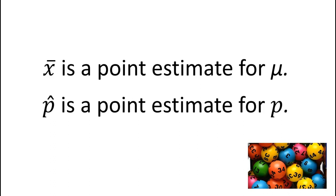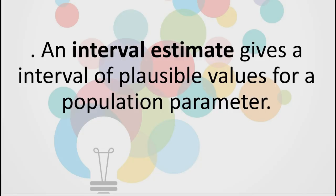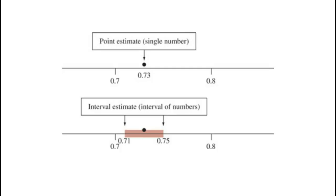We know that due to sampling error, the statistic or point estimate is rarely exactly equal to the parameter. Instead of using the point estimate, which is a single number, we can use an interval estimate. An interval estimate gives an interval of plausible values for a population parameter — an interval of numbers believed to cover the actual value of the parameter. In the illustration from your book, a point estimate is a single number, while an interval estimate creates an interval around the point estimate. By itself, a point estimate is insufficient because it does not tell us how close the estimate is likely to be to the parameter. The point estimate of 0.73 falls within a margin of error of 0.02 of the actual parameter, and using the margin of error, the interval estimate helps us gauge the accuracy of the point estimate.